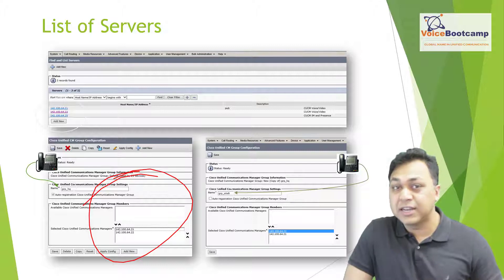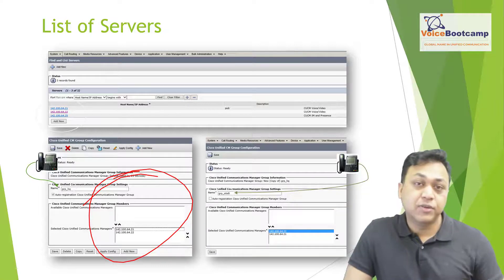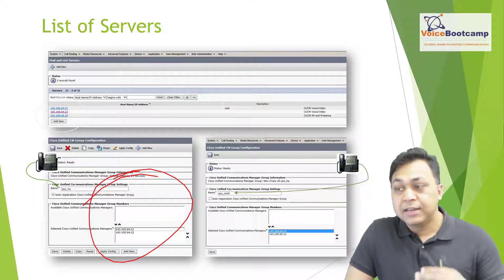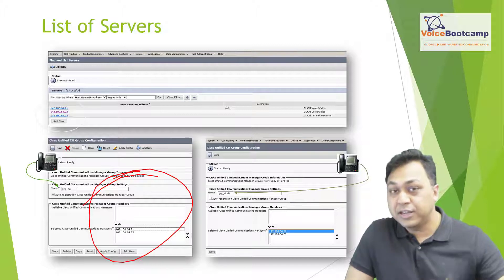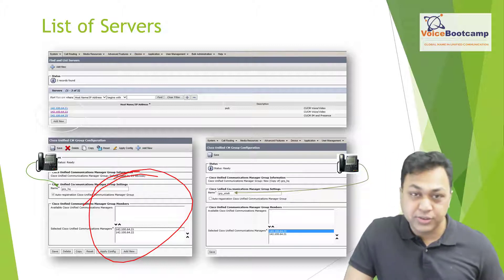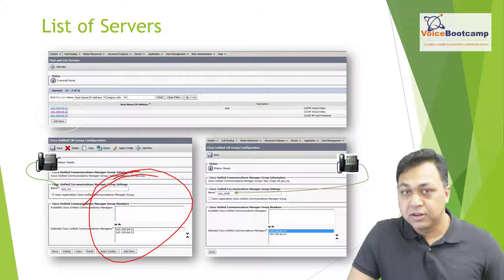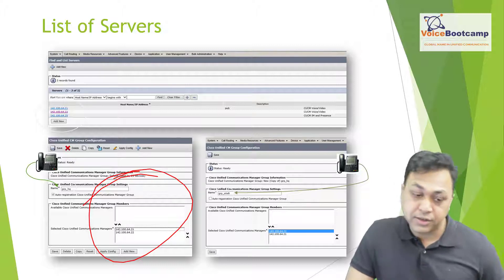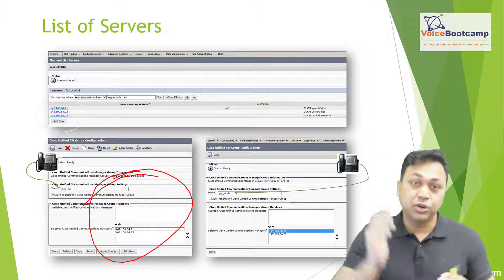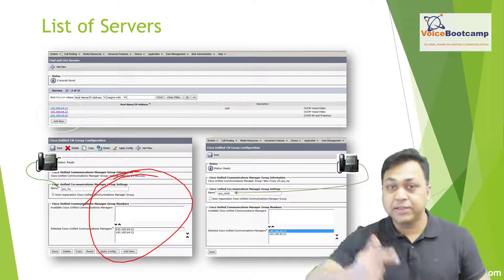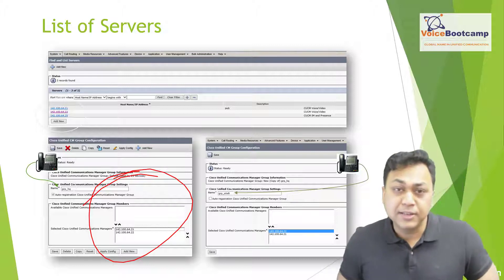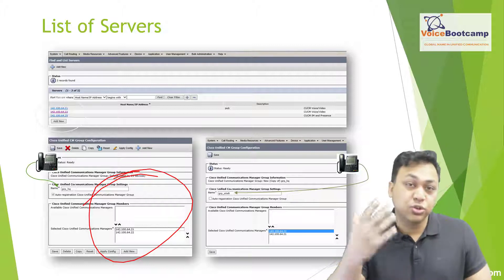The keepalive from a phone to its active primary Call Manager is 30 seconds. If the primary does not respond within 30 seconds, the phone fails over to the secondary. The keepalive from the phone to the secondary server is 60 seconds. If the secondary does not respond within 60 seconds, the tertiary server becomes secondary. There is no keepalive between the phone and the tertiary server directly — keepalive is only between the primary and secondary servers.